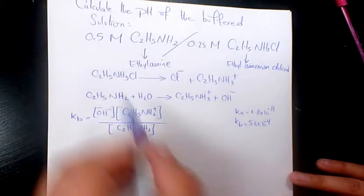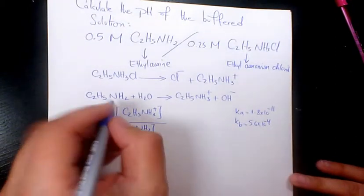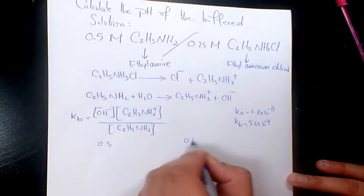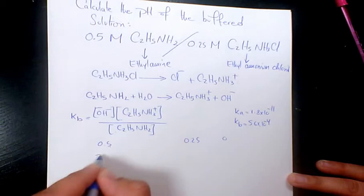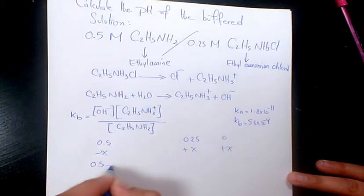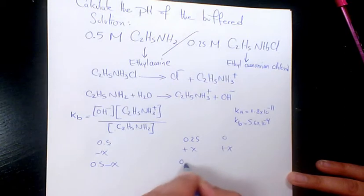So when we have the ICE table, we're gonna have 0.5 of this, 0.25 of this, and 0. Minus X plus X plus X. So 0.5 minus X, 0.25 plus X, and X.